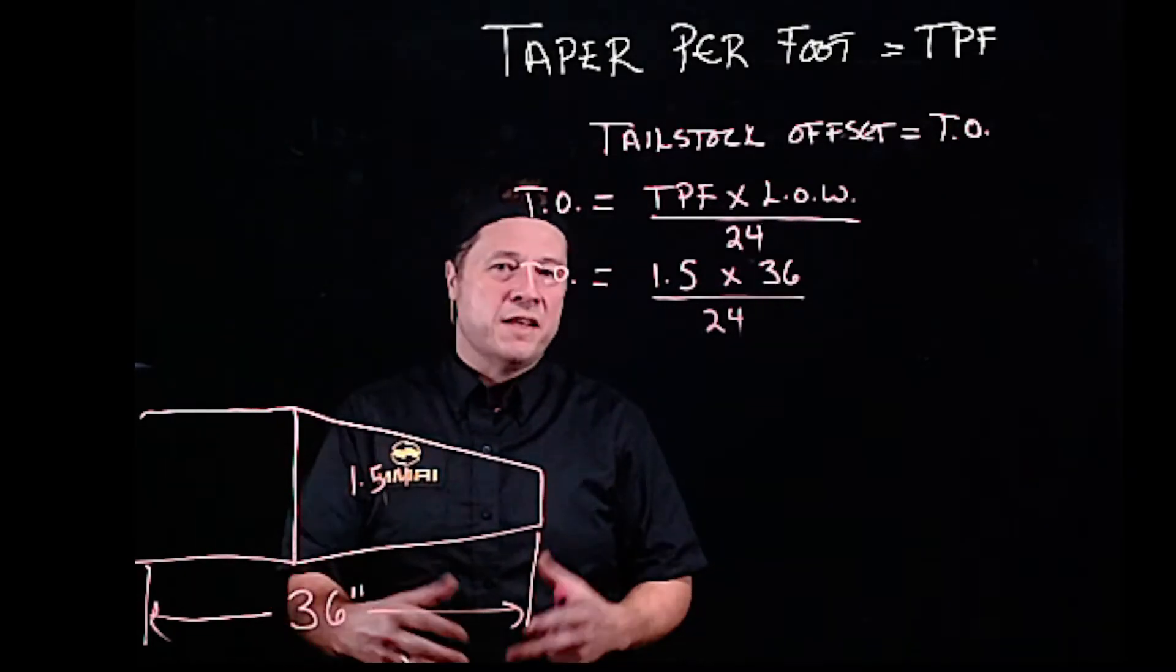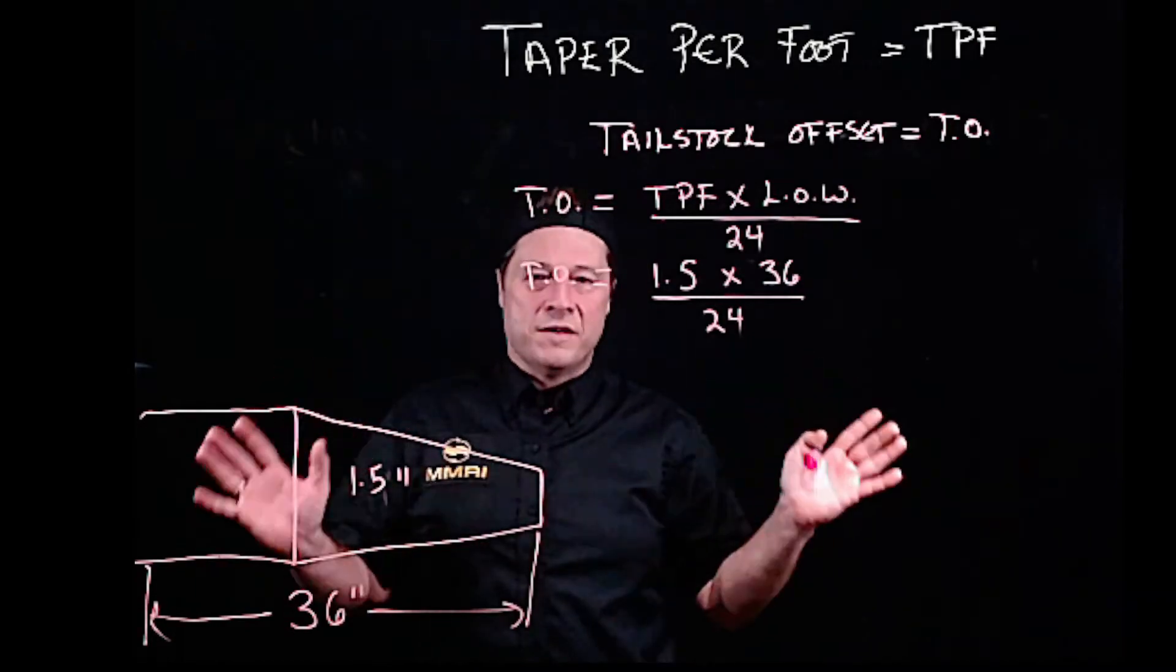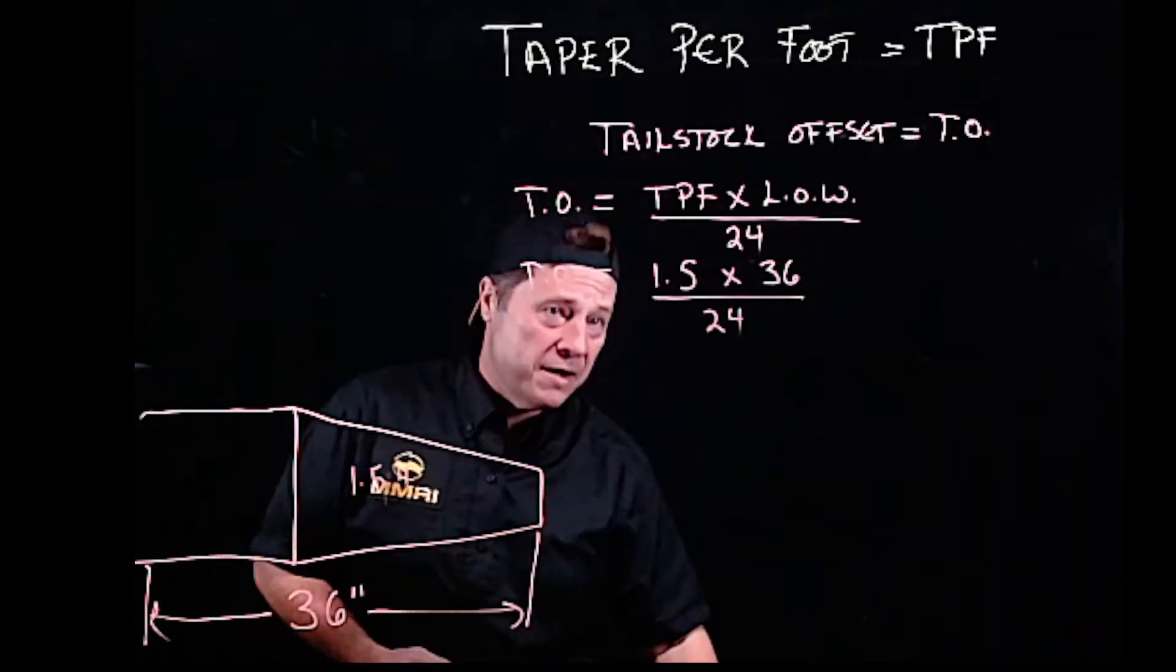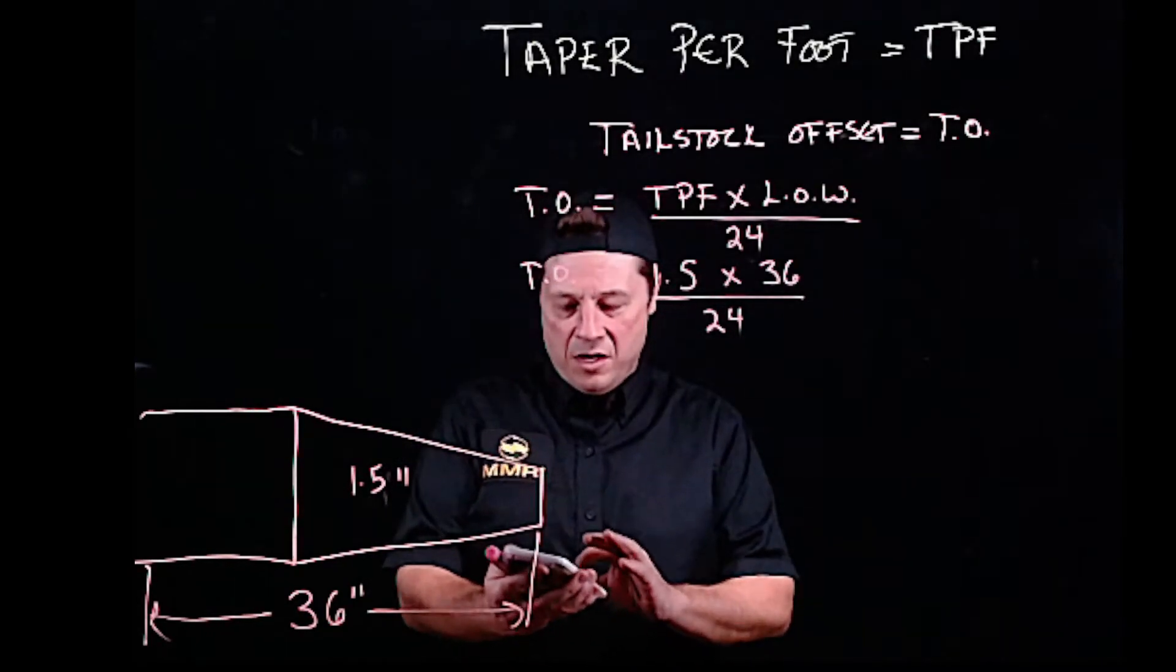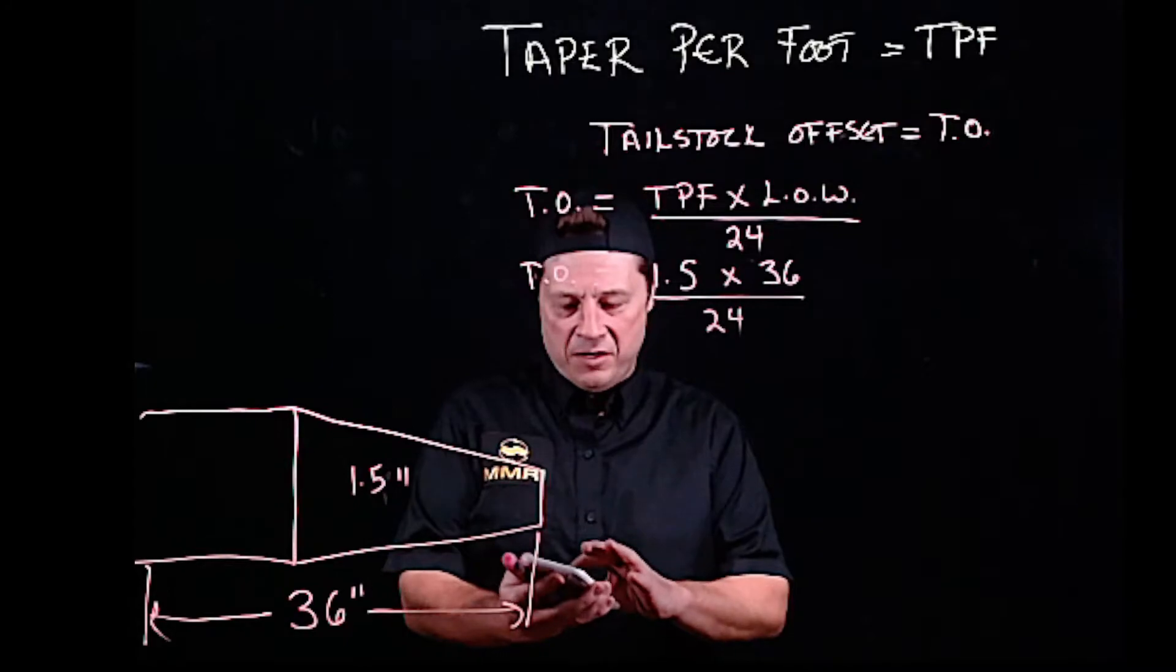Then you multiply that by the length of the work. That's always given to you, or almost always given to you, unless you got to go over and physically measure with the tape measure. Now we simply just solve it: 1.5 times 36 divided by 24.